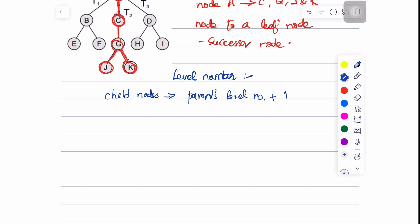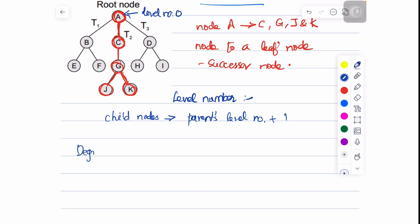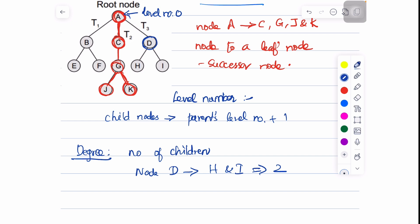The degree of a node is defined as the number of children that the node has. For node D, which has children H and I, the number of children is 2, so the degree of node D is 2. The degree of all leaf nodes is always 0 because leaf nodes do not have any children.